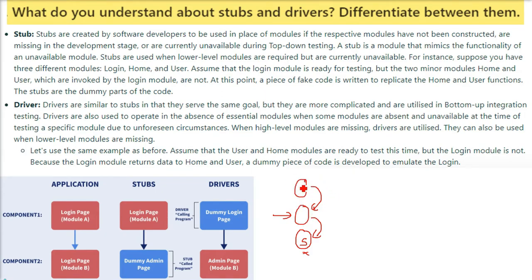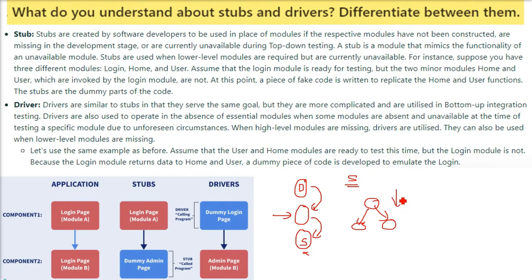There may be circumstances where the main module, which is calling the other modules, is not yet developed. In that case, we make a driver program. The driver is the main module; stubs are the called modules. If the major module is not prepared but the lower-level modules are being created, we make a module that will call them — that is called the driver. The driver is the main program; stubs are the called modules.